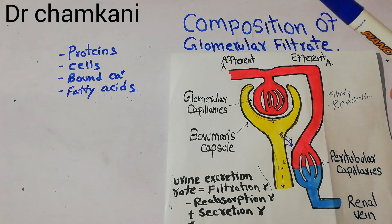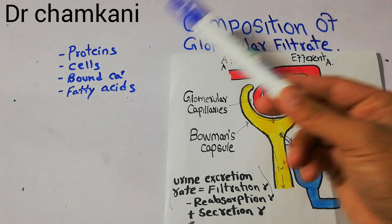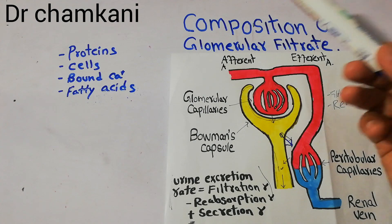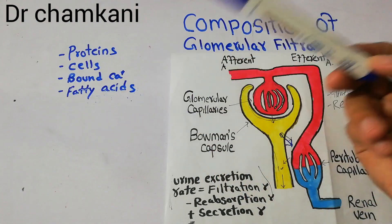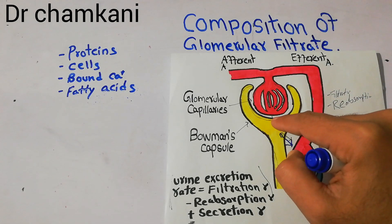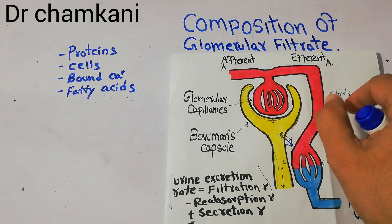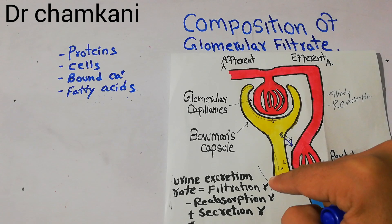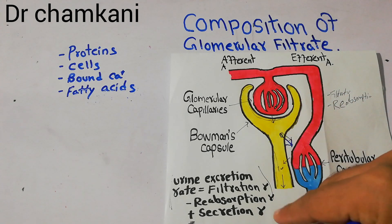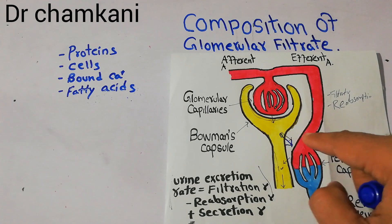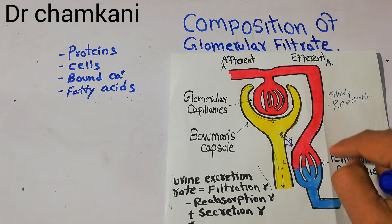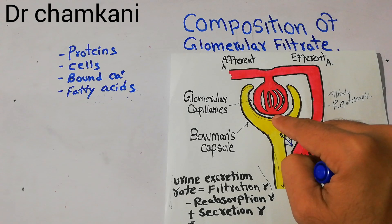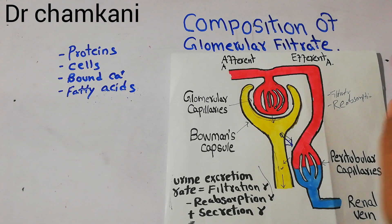So the composition of the glomerular filtrate is almost the same as plasma, except for proteins, cells, bound calcium, bound fatty acids, and a few other substances. These are the main components that will not enter the Bowman's capsule. Other substances like glucose, sodium, potassium, and water that do enter the Bowman's capsule must then move through the tubules of the nephron. Waste material will exit as urine, useful substances will be reabsorbed into the peritubular capillaries, and substances not fully filtered in the glomerulus will be secreted into the tubules from the peritubular capillaries.